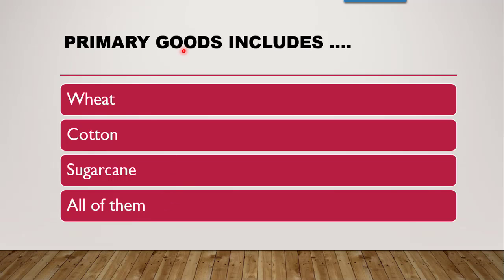The next question is: primary goods include — and the options are various raw materials. Primary goods are raw materials which can be obtained from different industries such as agricultural industry, mines, or fisheries. Examples like wheat, cotton, sugar cane are all primary goods, because wheat is primary for finished goods, cotton is raw material for cloth, and sugar cane is raw material for sugar. The correct answer is all of them.